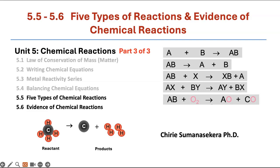Welcome to part 3 of chemical reactions unit 5. Today we are going to discuss 5.5 five types of chemical reactions and 5.6 types of evidence that a chemical reaction has occurred.